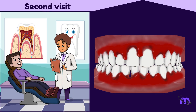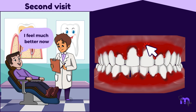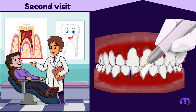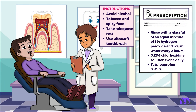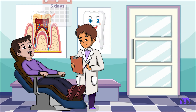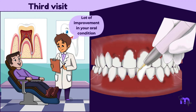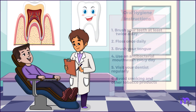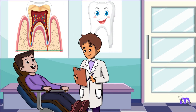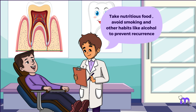During the second visit, the patient reported improvement in pain and other signs and symptoms. I noted that the gingival margin was erythematous but without a pseudomembrane. I did scaling to remove the previously covered calculus, then sent him home with the same instructions and told him to report back in 5 days. During the third visit, I observed considerable improvement. I did scaling to remove calculus remnants, then advised him about oral hygiene procedures and the effect of nutrition, smoking, and other habits that may lead to recurrence of the lesions.